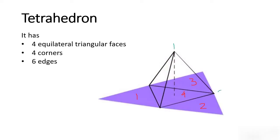This will be 1, 2, 3 and 4. It can have 6 edges — one, two, three, four, five, and six edges.